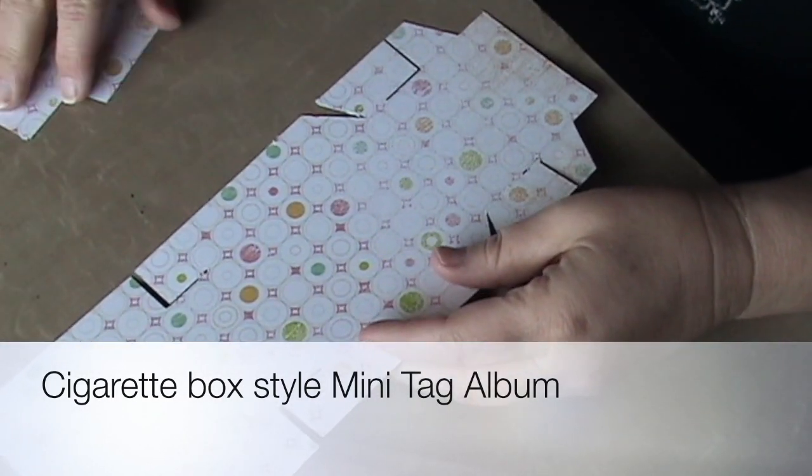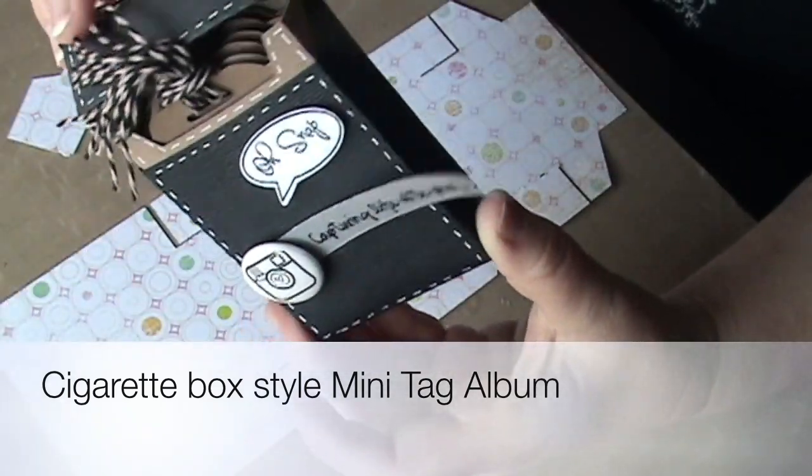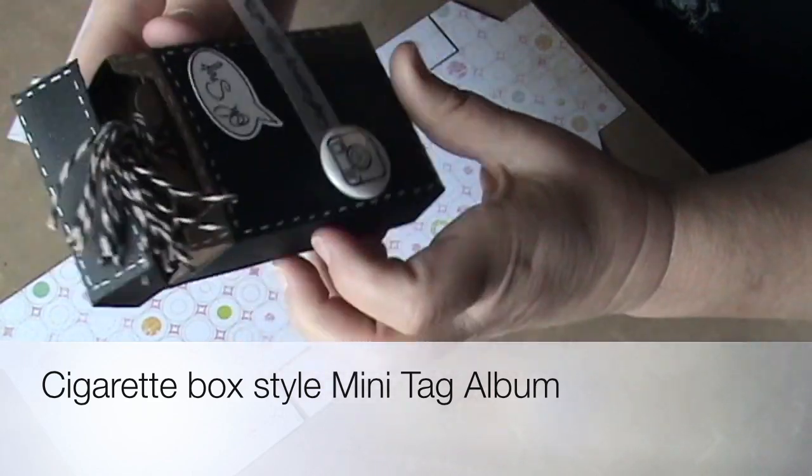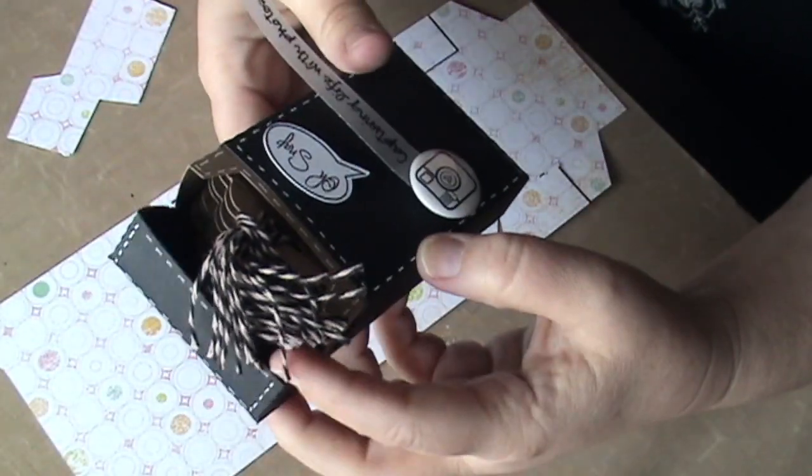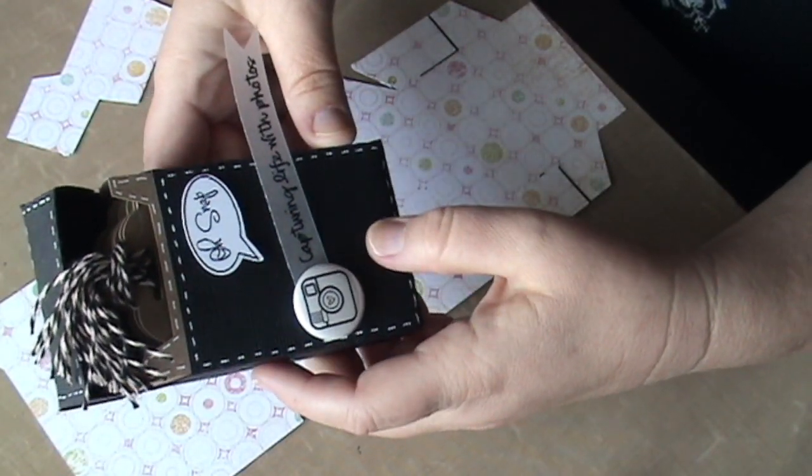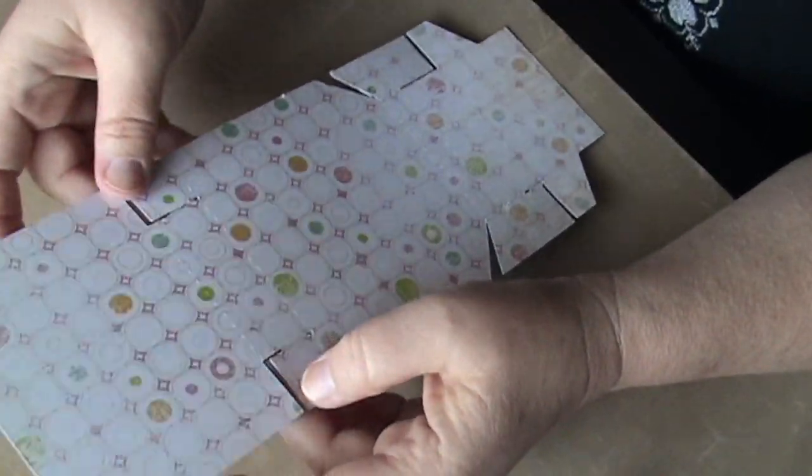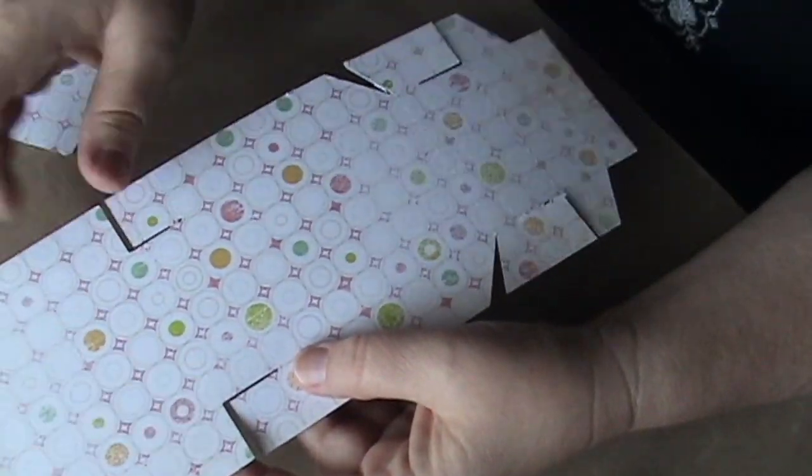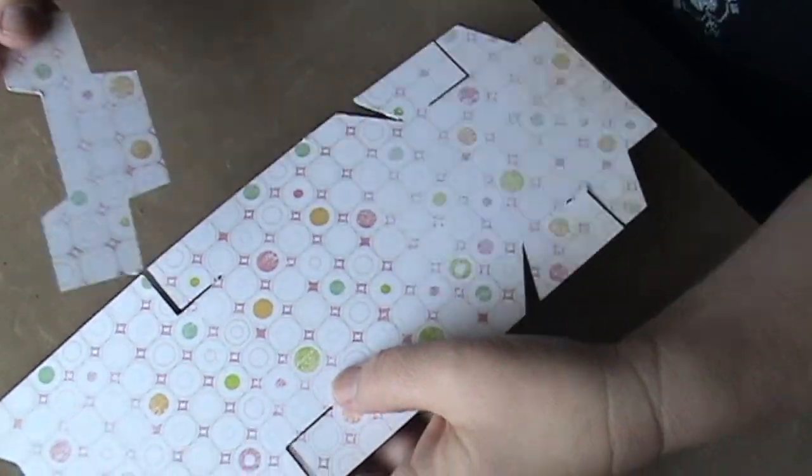Hi guys, Debbie with Crafting Chaos here. I wanted to show you how to put together my little cigarette box tag album. I've had it posted on my blog a couple times in different styles. This is not the best cardstock to use for it, but I didn't want to waste any good paper. Here is my template and we're going to do these two pieces today.